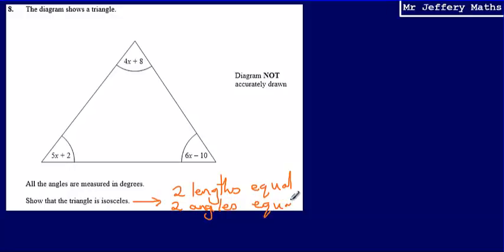Now if I think about the question here, what I'm going to need to show is that either two lengths are equal or that two angles are equal. Now seeing as I'm given the angles as algebraic expressions, it's going to be easier for me to work out and to say that two angles are equal.